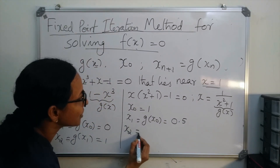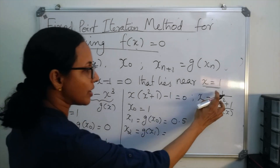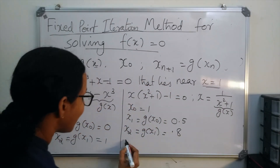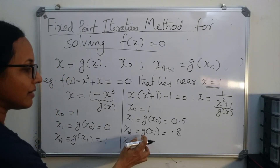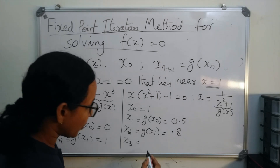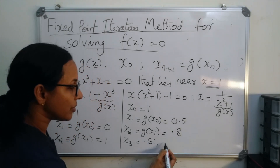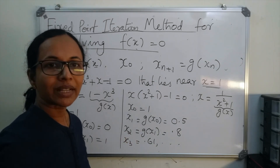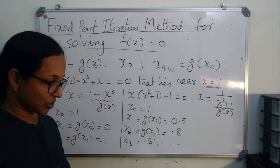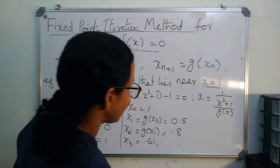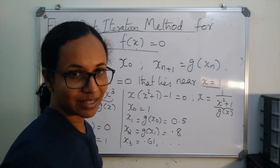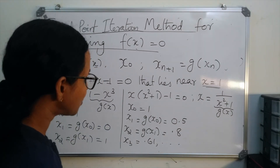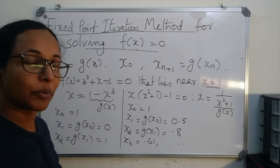Then x₂ = g(x₁) = 1/(0.5² + 1) = 0.8. And x₃ = g(x₂) = 0.61. You stop this procedure when you are getting the same values in two successive approximations. In this problem, you will get the answer at the 15th step — that is the problem with this iteration method, it is very lengthy, but we have to find that many approximations.